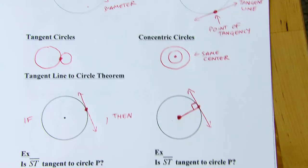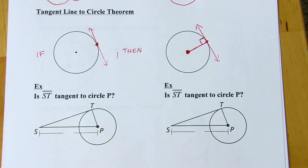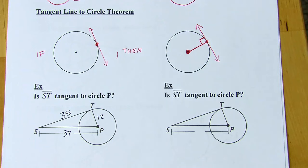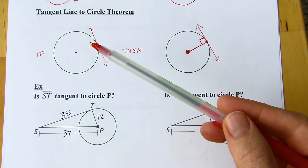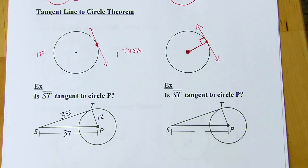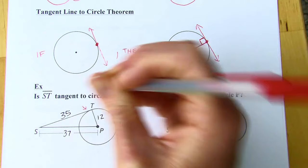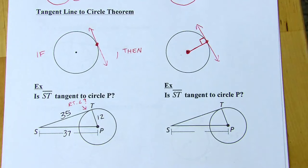We're going to put that to use in these next examples. Is segment ST tangent to circle P? Usually, if a line looks like it's tangent to a circle, you can assume it is — the only exception is if you're asked whether the line is actually tangent, like in this example. If it was tangent, then I know I'd have a right angle. So another way of asking this question is: is that a right angle there? If it is a right angle, then we've got a tangent line. The way I can check if that's a right angle is to see if it's a right triangle — if it is, it's going to work with the Pythagorean theorem.